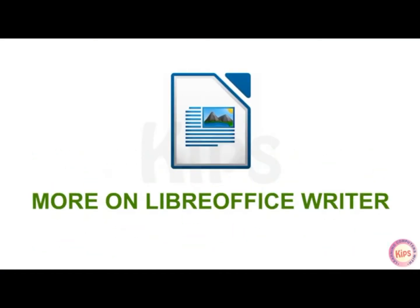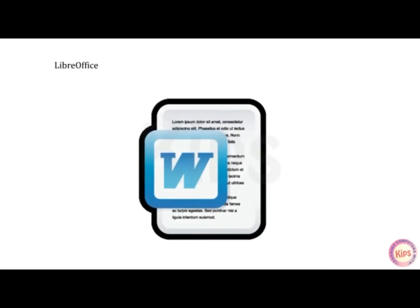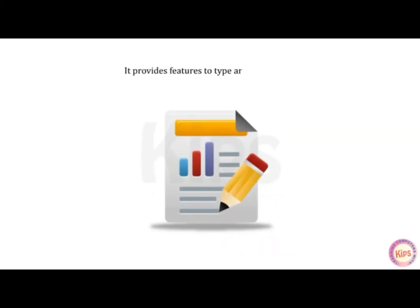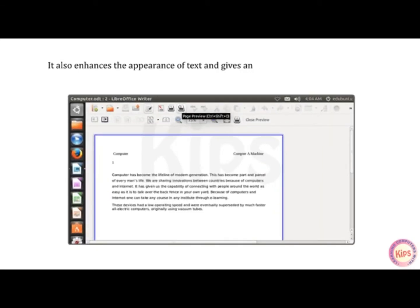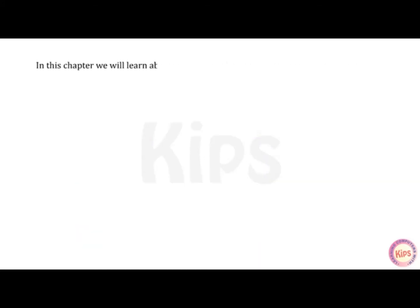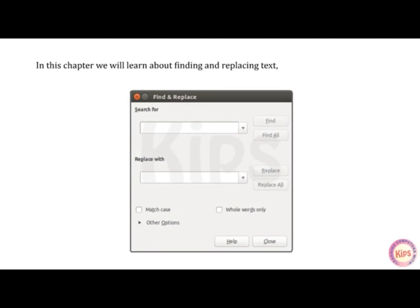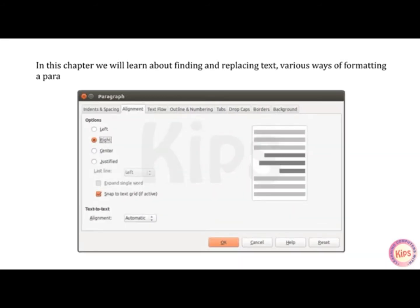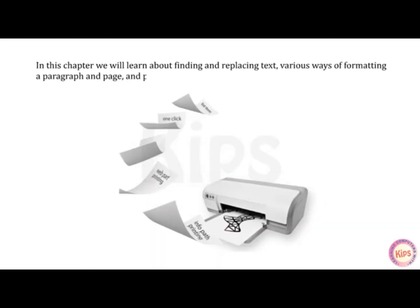Today we will learn about more on LibreOffice Writer. LibreOffice Writer is a word processor that helps you to create documents with a professional look. It provides features to type and modify text, enhances the appearance of text, and gives an option to preview a document before printing it. In this chapter, we will learn about finding and replacing text, various ways of formatting a paragraph and page, and printing a document.